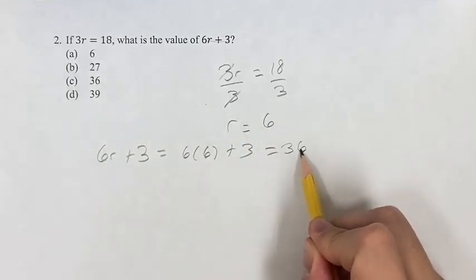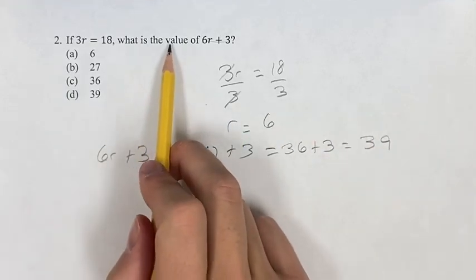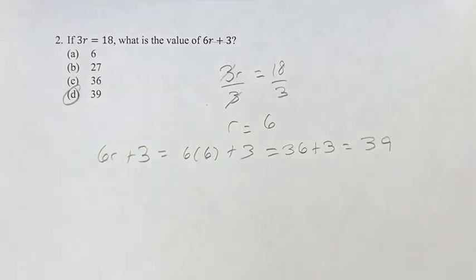6 times 6 is 36, plus 3 is equal to 39, which is the value of 6r plus 3 and your final answer, D.